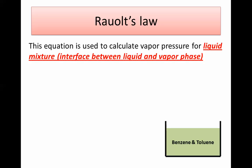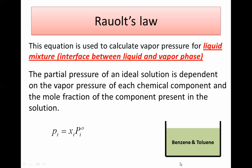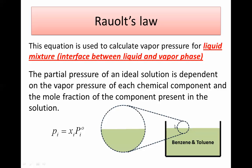Raoult's law is used for liquid mixtures, where you calculate the vapor pressure at the interface between the liquid and vapor phases. It states that the partial pressure of component i equals the mole fraction in the liquid phase — not the vapor phase — multiplied by the vapor pressure. For example, for a benzene-toluene mixture, at the interface the partial pressure of toluene equals the mole fraction of toluene in the liquid multiplied by its vapor pressure.